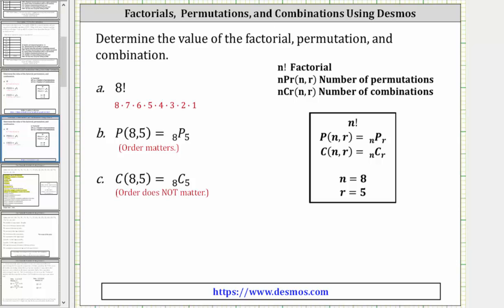For our examples, we will evaluate eight factorial, the permutation of eight items selected five at a time, or eight permute five, as well as the combination of eight items chosen five at a time, or eight choose five. Remember, for a permutation, order matters, and for a combination, order does not matter.